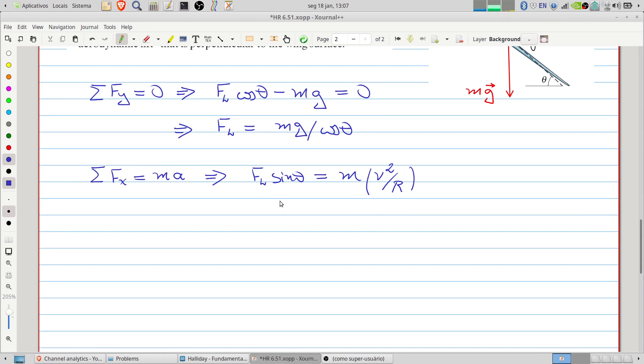The lift is mg divided by cosine. So we have mg divided by cosine of theta multiplied by sine of theta. This equals m times v squared divided by the radius. Now we can cancel the mass and find the radius.